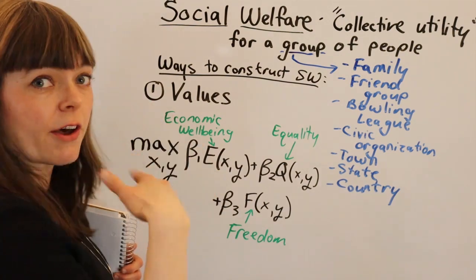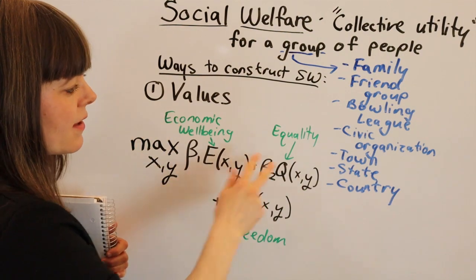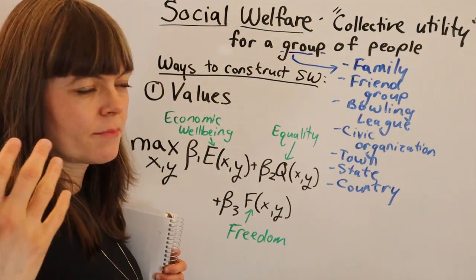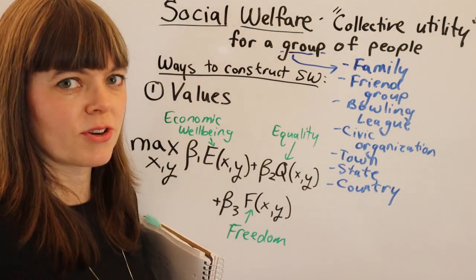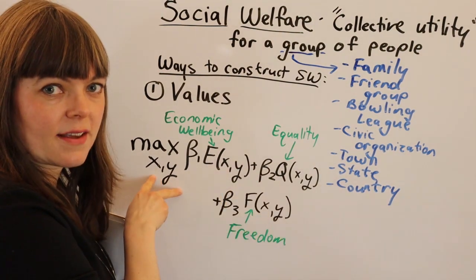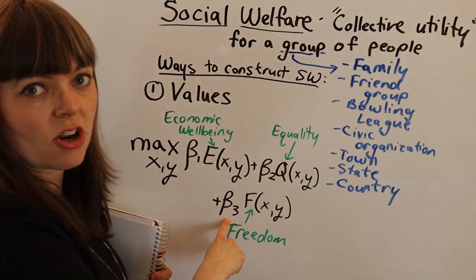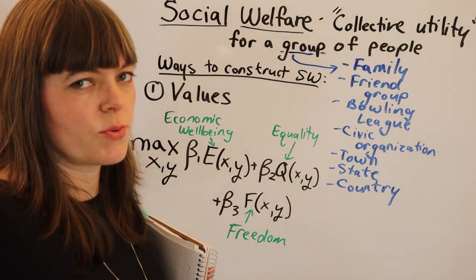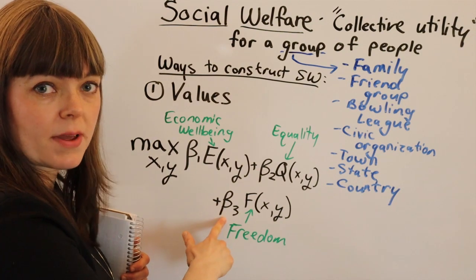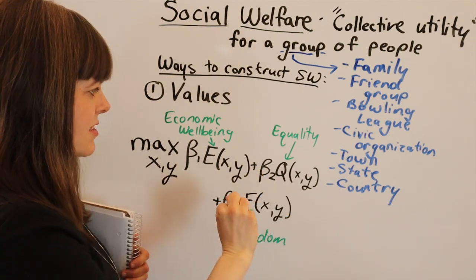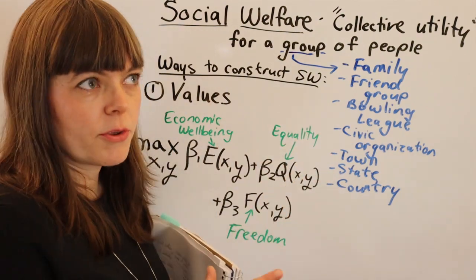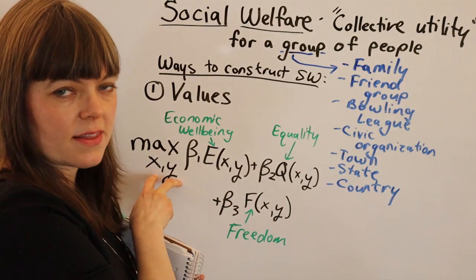This social welfare function has three values for the population that we're trying to maximize: economic well-being, equality of the population (which might be measured as a Gini coefficient), and freedom. Each of these values is a function of the choices you're making as the government, and an importance weight is placed on each. Some disagreements between leaders are over how important each factor is — some place heavy importance on freedom and lower on equality, for others it's the reverse, and for some it's about equal for all three.